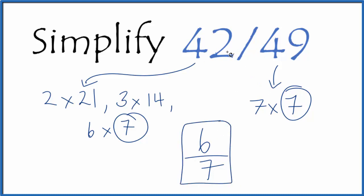These two numbers, they give you the same value. If you divide 42 by 49 or 6 by 7, you'll get the same decimal. It's just that 6/7, that's in simplest form.